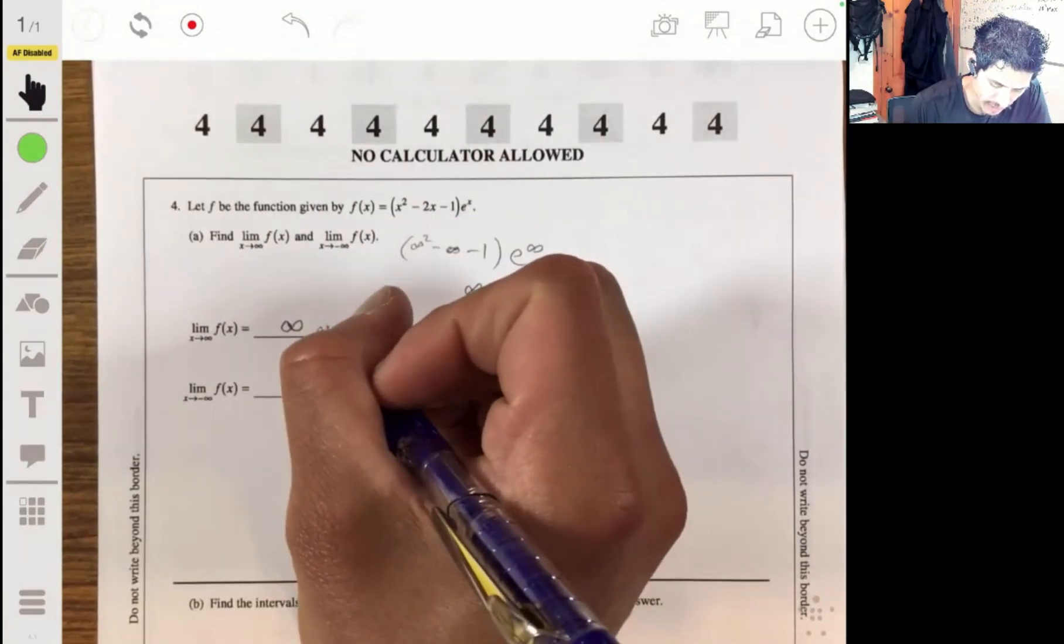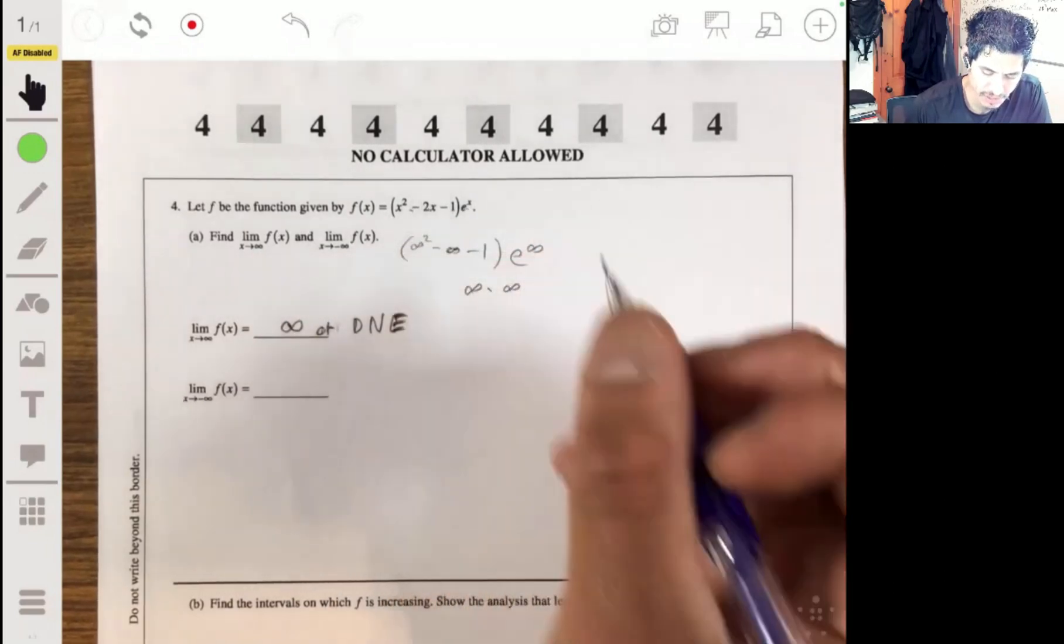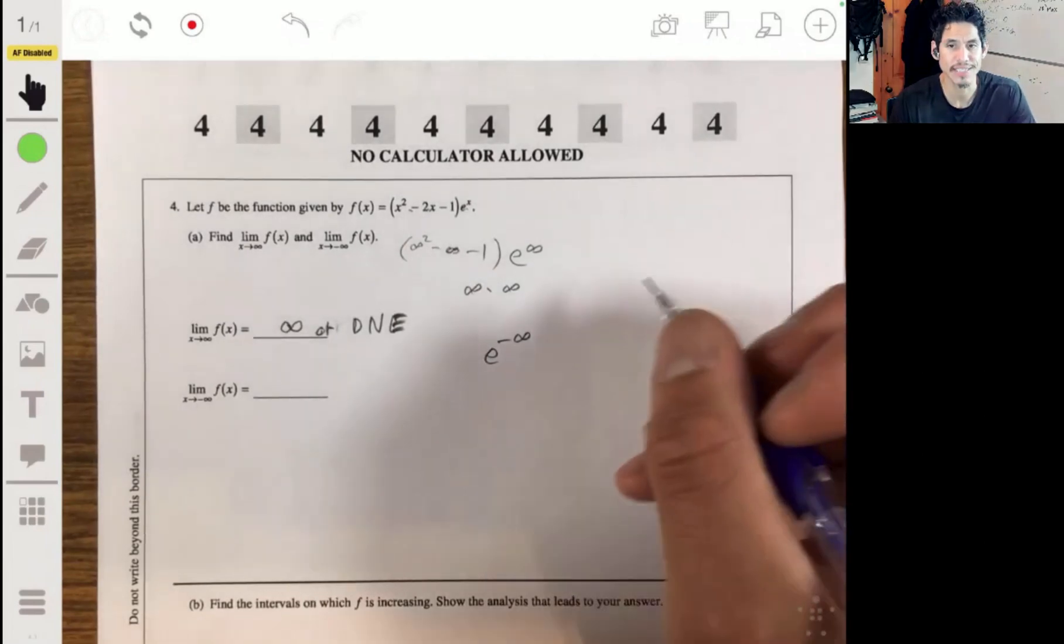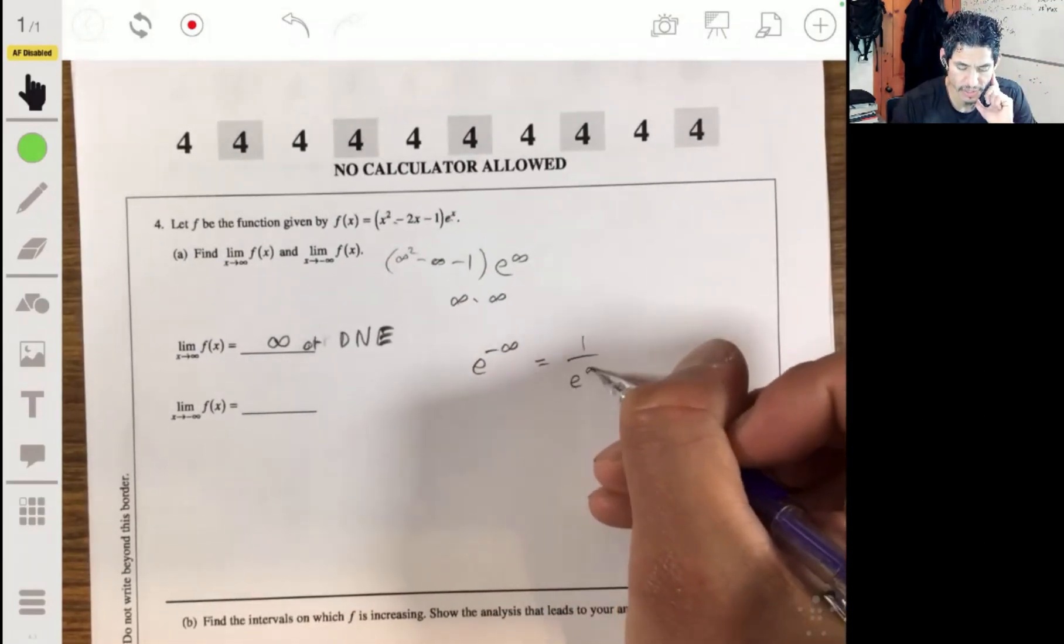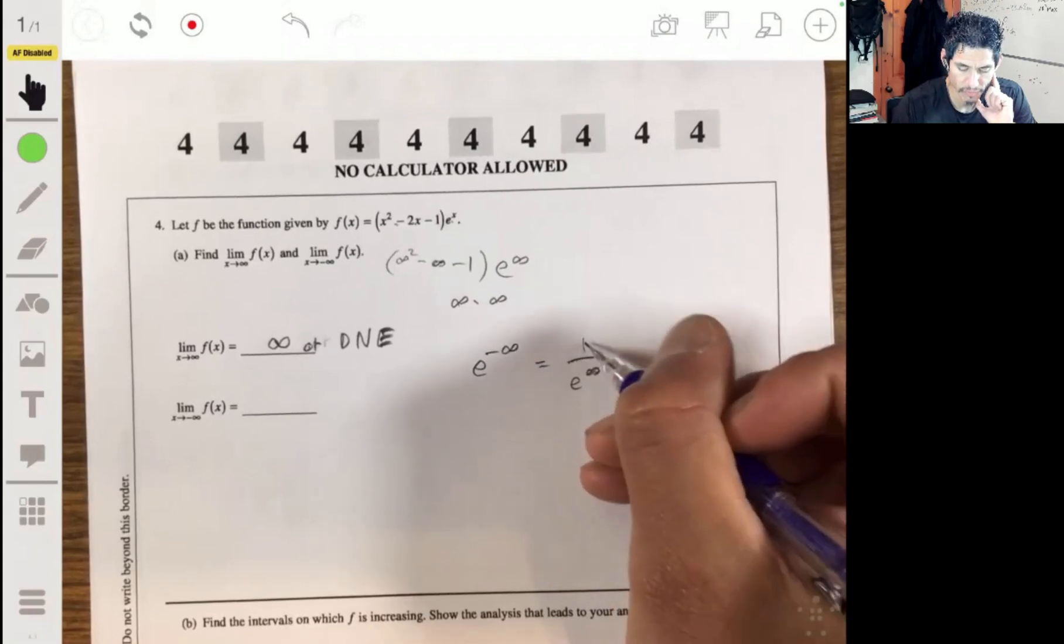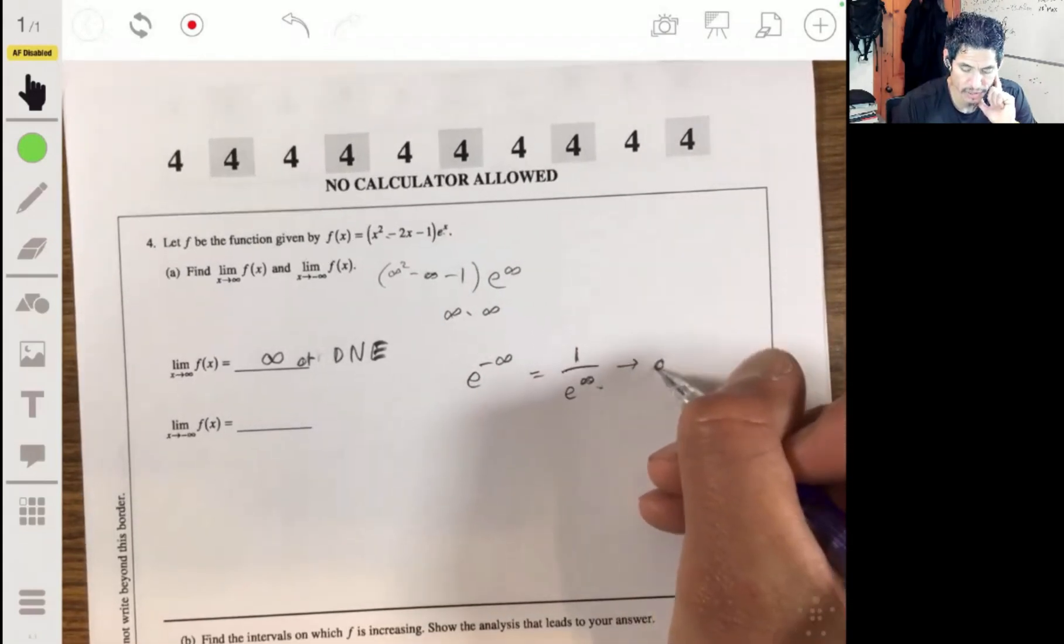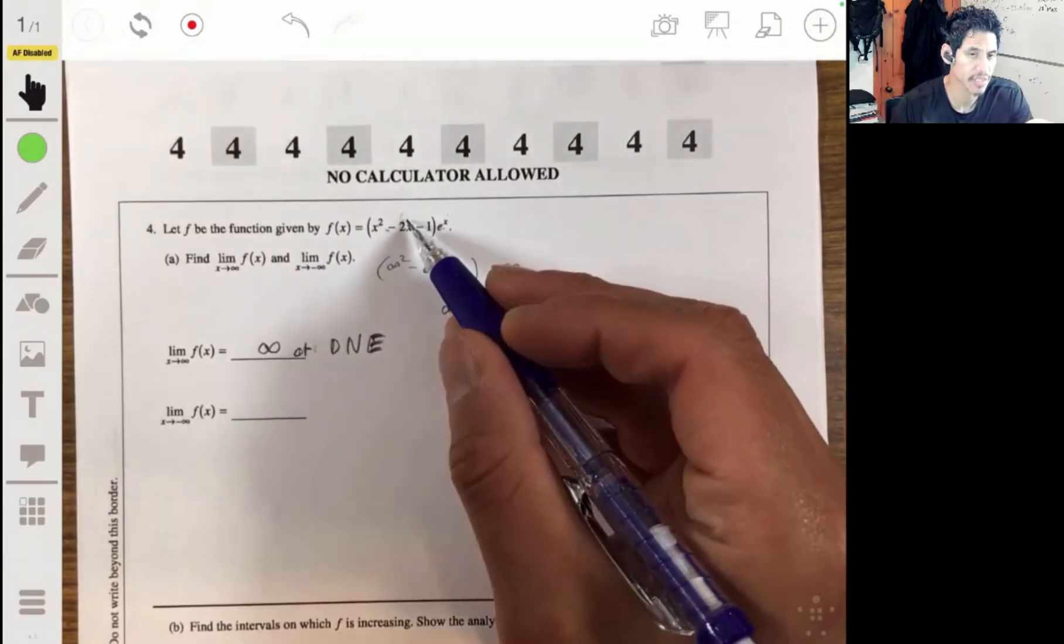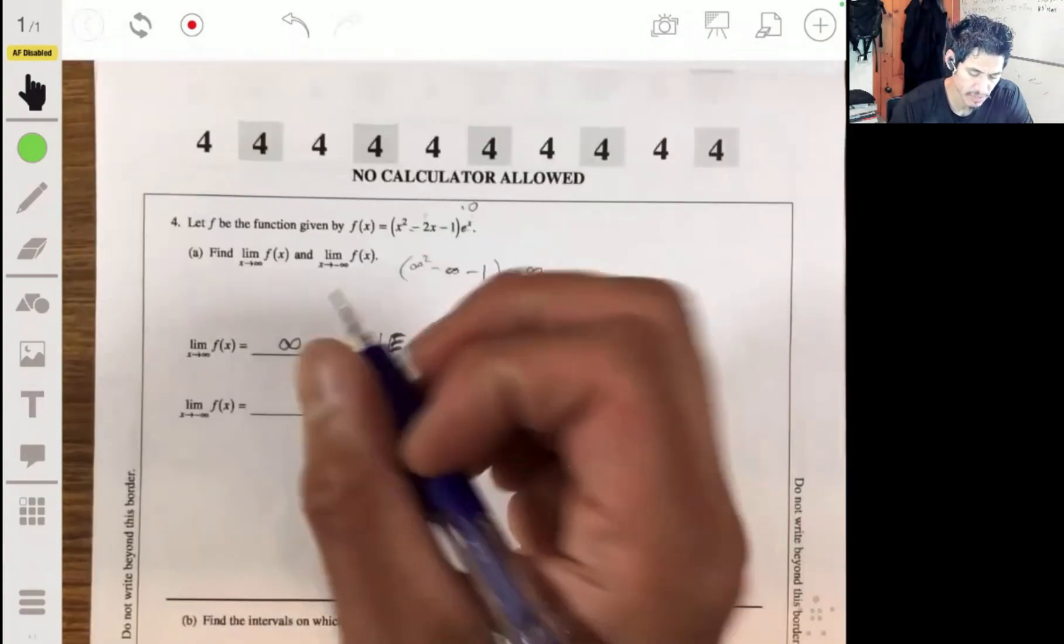Now when it goes to negative infinity, what happens with this e over here, we have e to the negative infinity. You can look at that as like zero because this is like one over e to the infinity. So you have one over a huge number. And this goes to zero. So then it ends up being like zero times, it doesn't matter if we say infinity or negative infinity, if we got a zero times something, it just becomes zero.